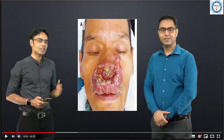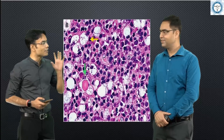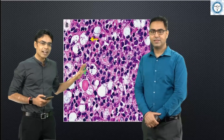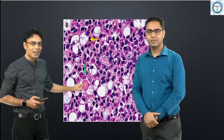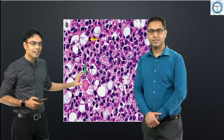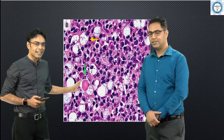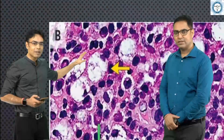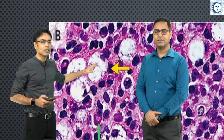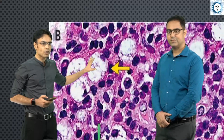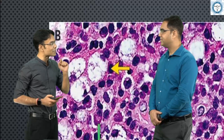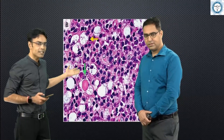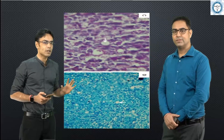Histopathologically, there are two things which are very important and diagnostic: Russell bodies and Mikulicz cells. In this slide, the Russell body is shown here — this pinkish kind of deposition — which is basically immunoglobulins produced by plasma cells that are getting deposited. These blank spaces which you are seeing are all your Mikulicz cells. We can do normal H&E staining, but there are special stains like PAS and Giemsa.